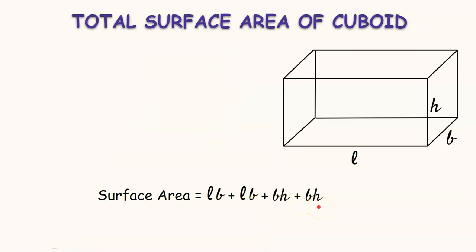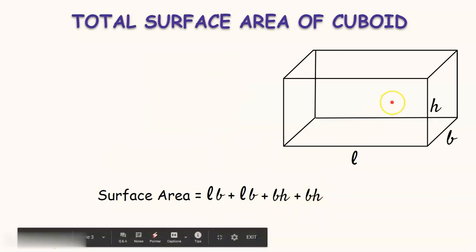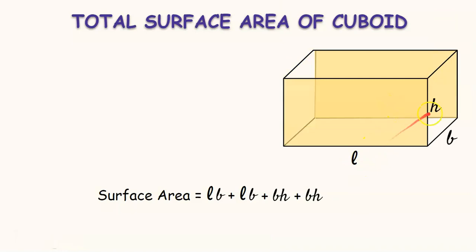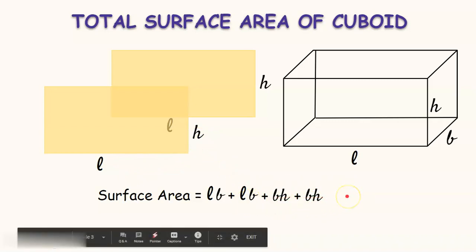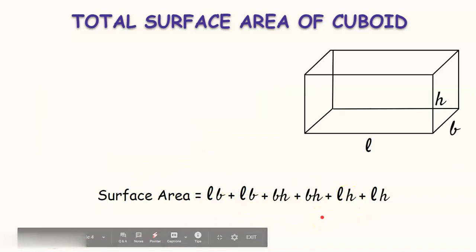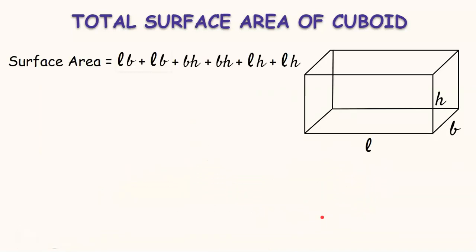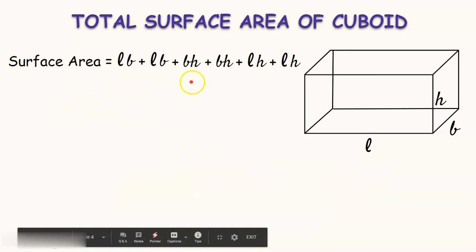Next, let us find another pair of opposite faces — the back face and front face — whose dimensions are L and H each. Let us find the area of these two faces with the same dimensions L and H. The areas of these two faces would be L×H each. Adding these two areas to the previous areas gives us the total surface area: LB + LB + BH + BH + LH + LH.